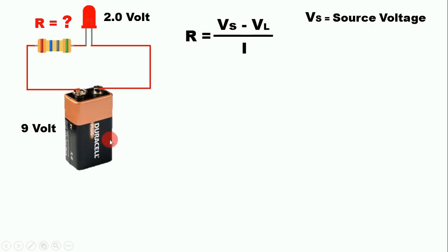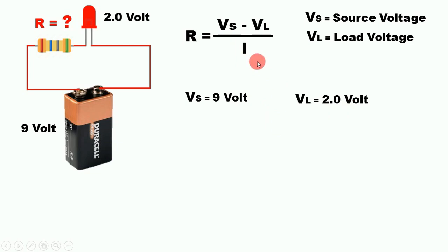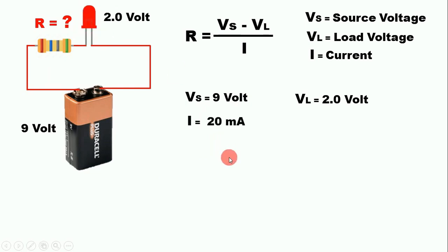The source voltage from our 9 volt battery is 9 volts. Vl means load voltage — the operating voltage of the equipment being connected. The operating voltage of the LED here is 2 volts. I means current. You must also know the current value of the equipment. For this red LED the current value is 20 milliamperes. To find the operating voltage and current of an LED, you look at its datasheet.